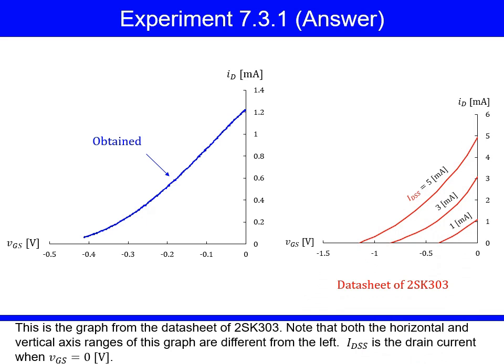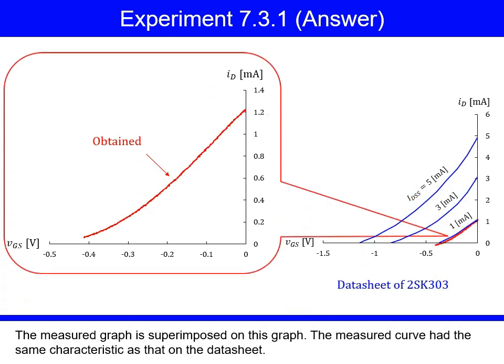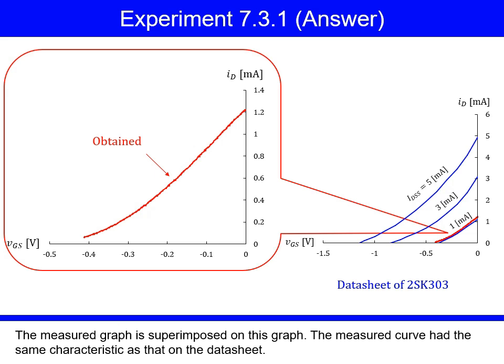This is the graph from the data sheet of 2SK303. Note that both the horizontal and vertical axis ranges of this graph are different from the left. IDSS is the drain current when VGS is equal to 0 volts. The measured curve is superimposed on this graph. The measured curve had the same characteristic as that on the data sheet.